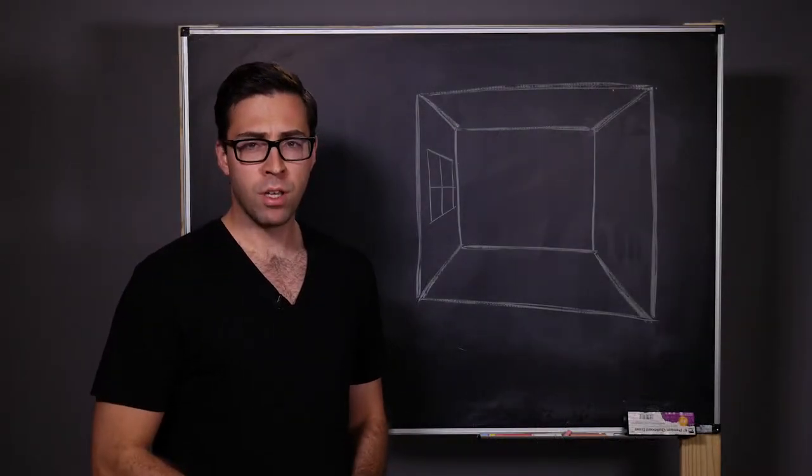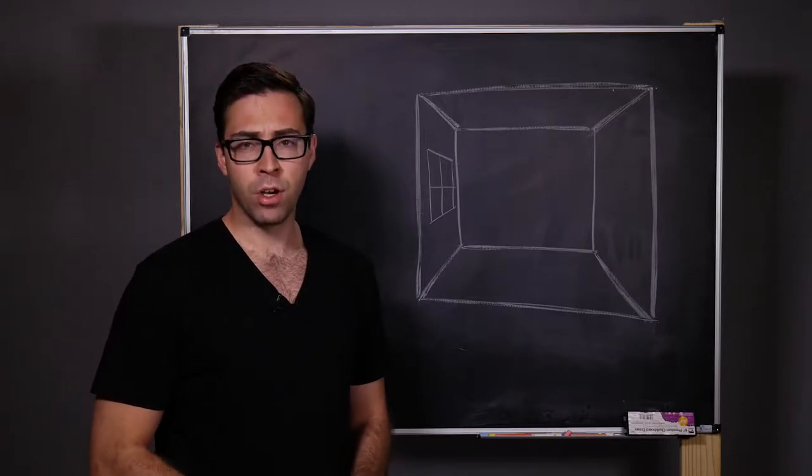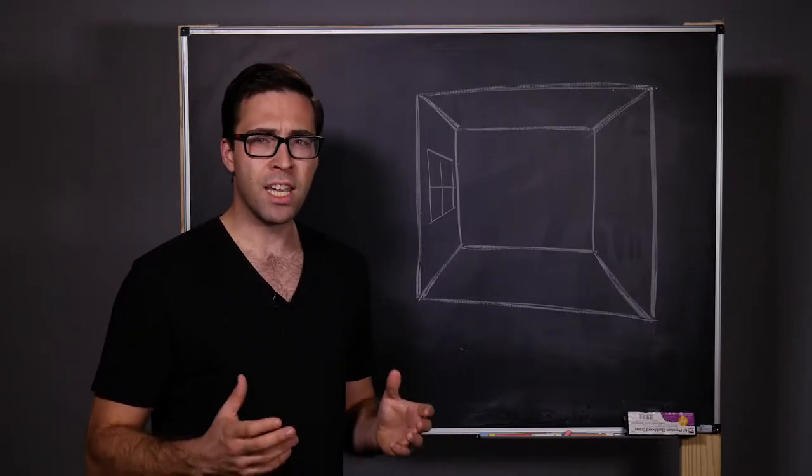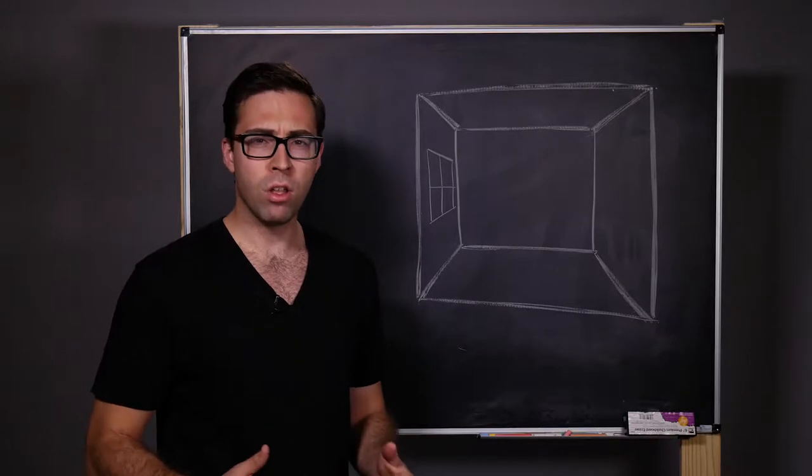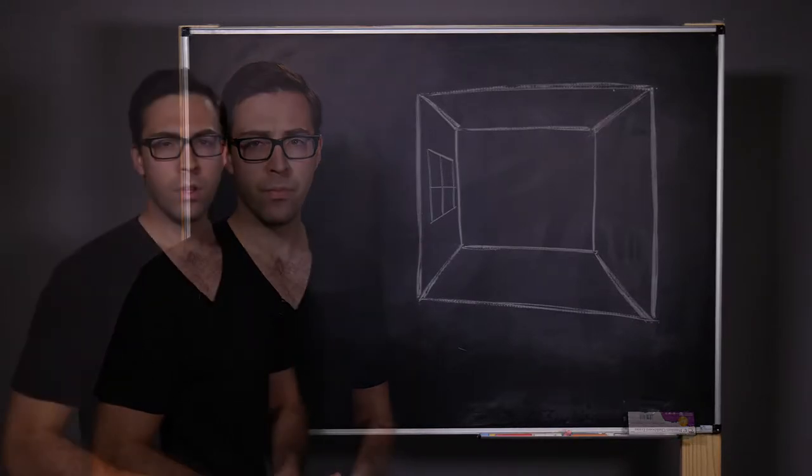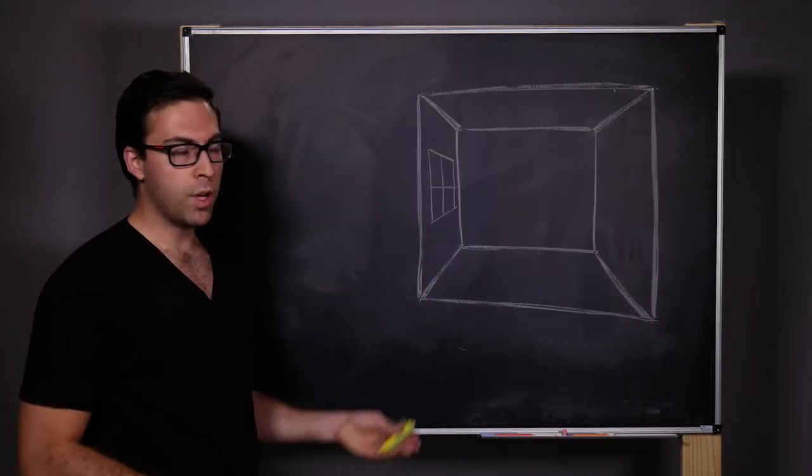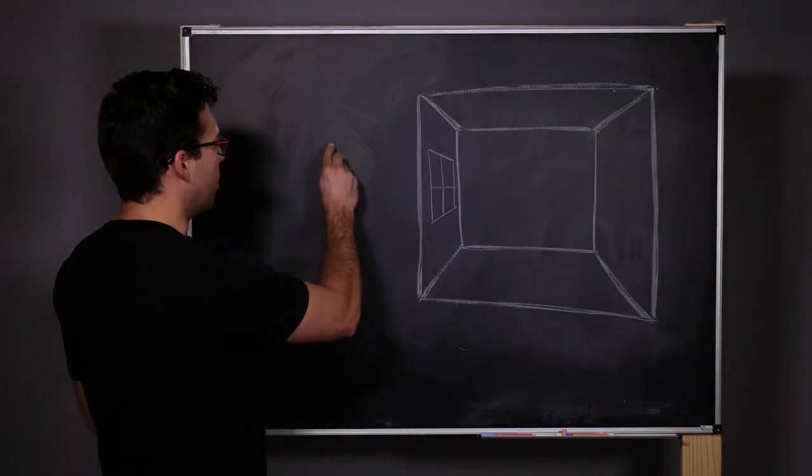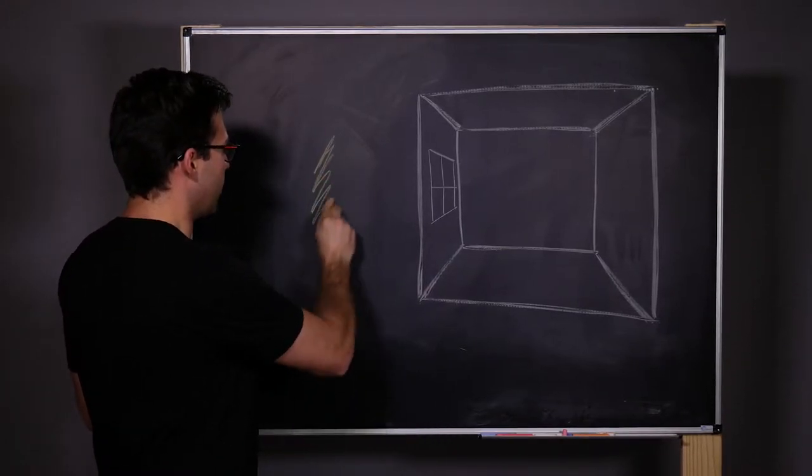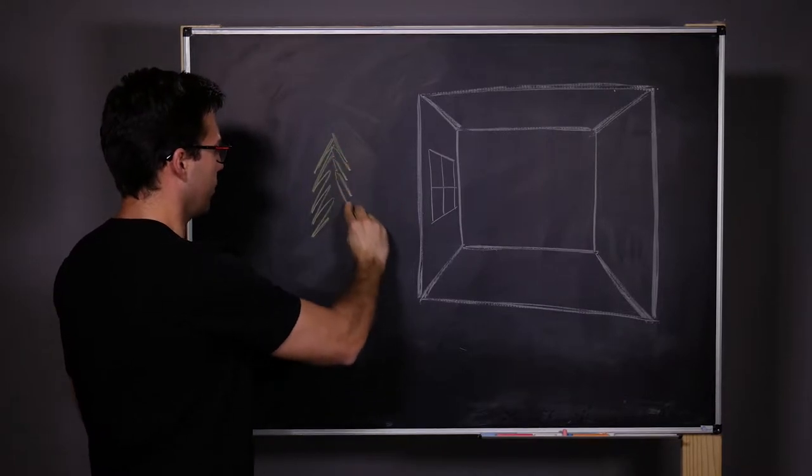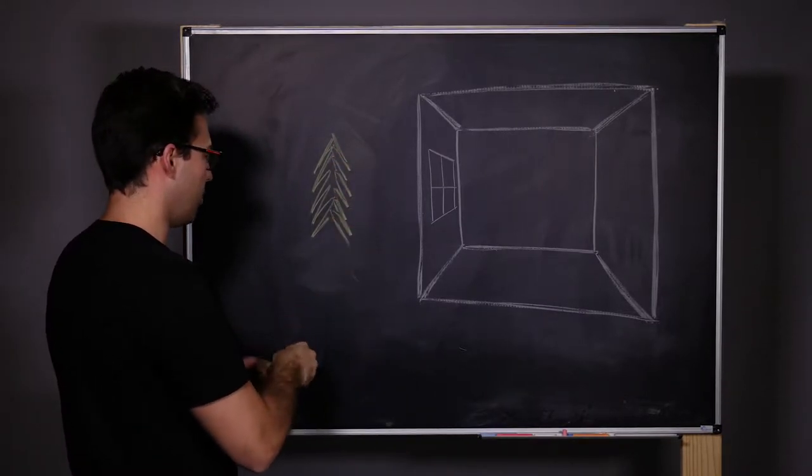So what is a camera obscura? In Latin, it translates to dark room. And although it's not really a camera in the traditional sense, all of the workings are there. So let's start with a room with a window on one wall. Outside this window, let's say that we have a tree. Something like this.